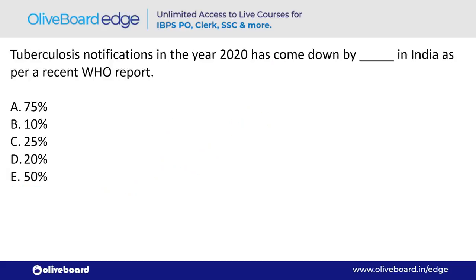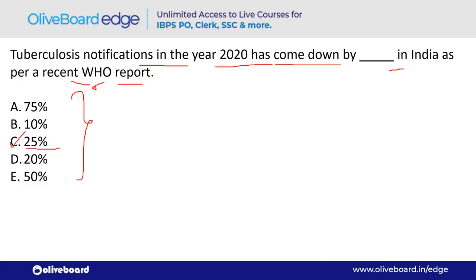Tuberculosis notifications in 2020 came down by how much percent in India as per a recent WHO report? The answer is 25% — option C.